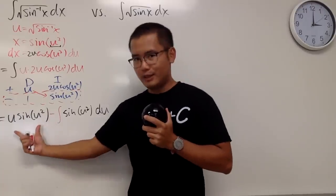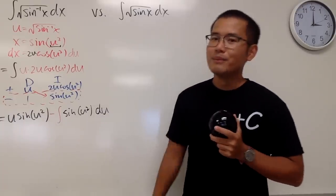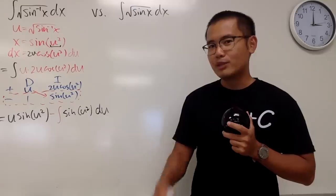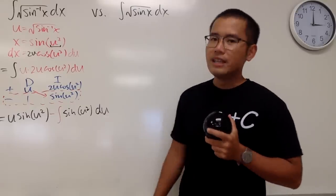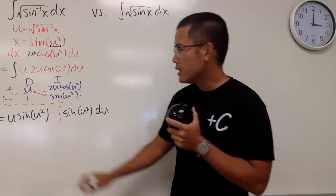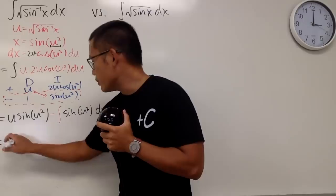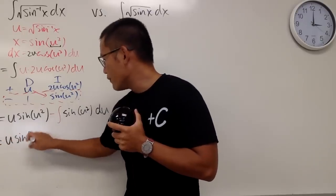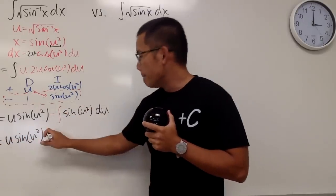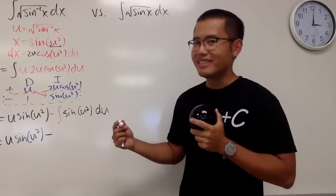Now, this is done, and this right here is actually non-elementary, but we can use a special function for it. Namely, the Fresnel integral, and that's the sine version for it. So, we end up with u sine of u squared, and the answer right here is minus,